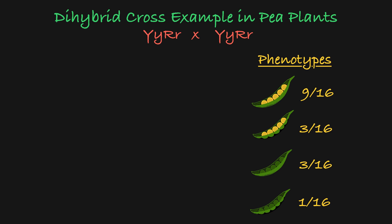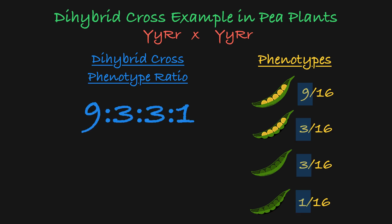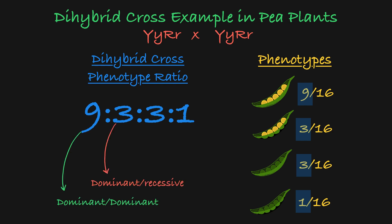This distribution of 4 phenotypes is the classic Mendelian 9 to 3 to 3 to 1 ratio for a dihybrid cross. This is the breakdown you should expect when completing any dihybrid cross with unlinked autosomal genes. 9 sixteenths of the offspring will have the dominant phenotype for both genes. 3 sixteenths will have the dominant phenotype for the first gene but the recessive phenotype for the second gene. 3 sixteenths will have the recessive phenotype for the first gene and the dominant phenotype for the second gene. And 1 sixteenth will have the recessive phenotype for both genes.